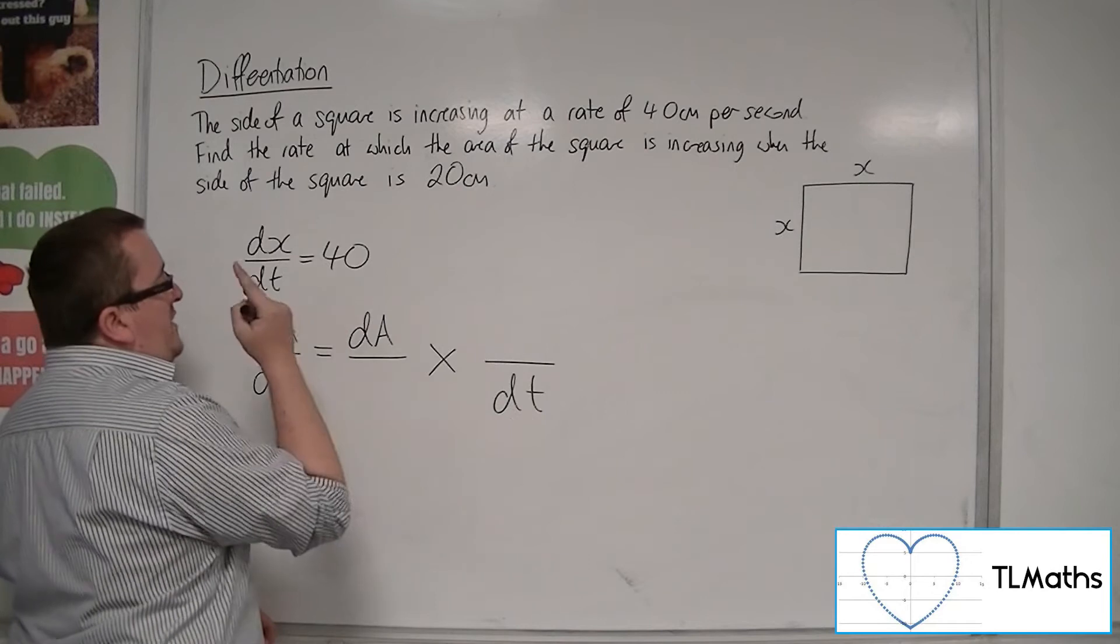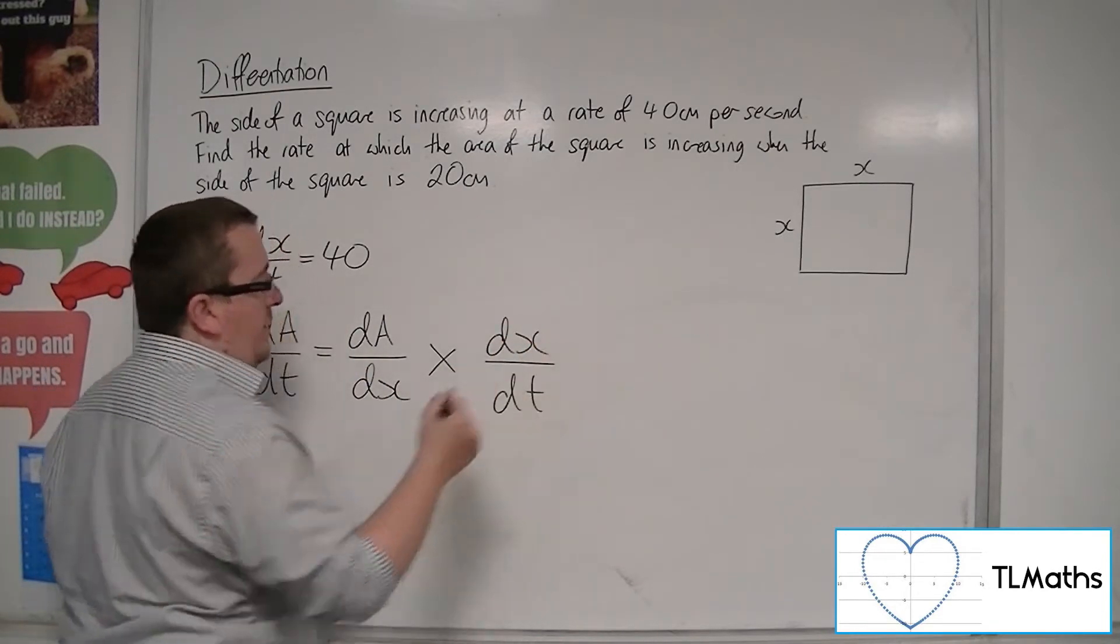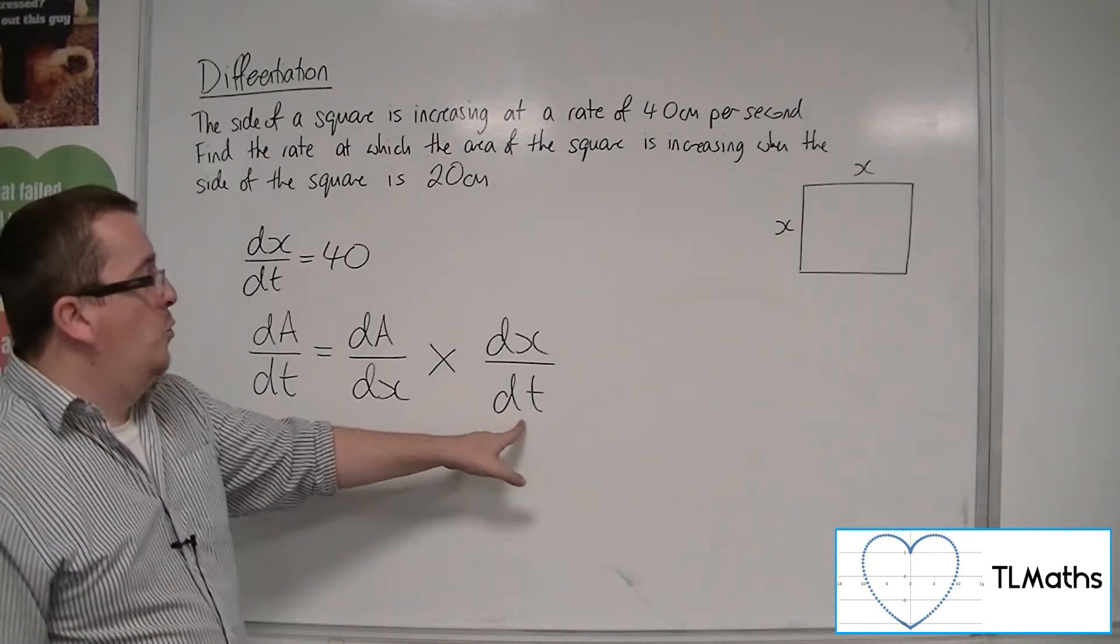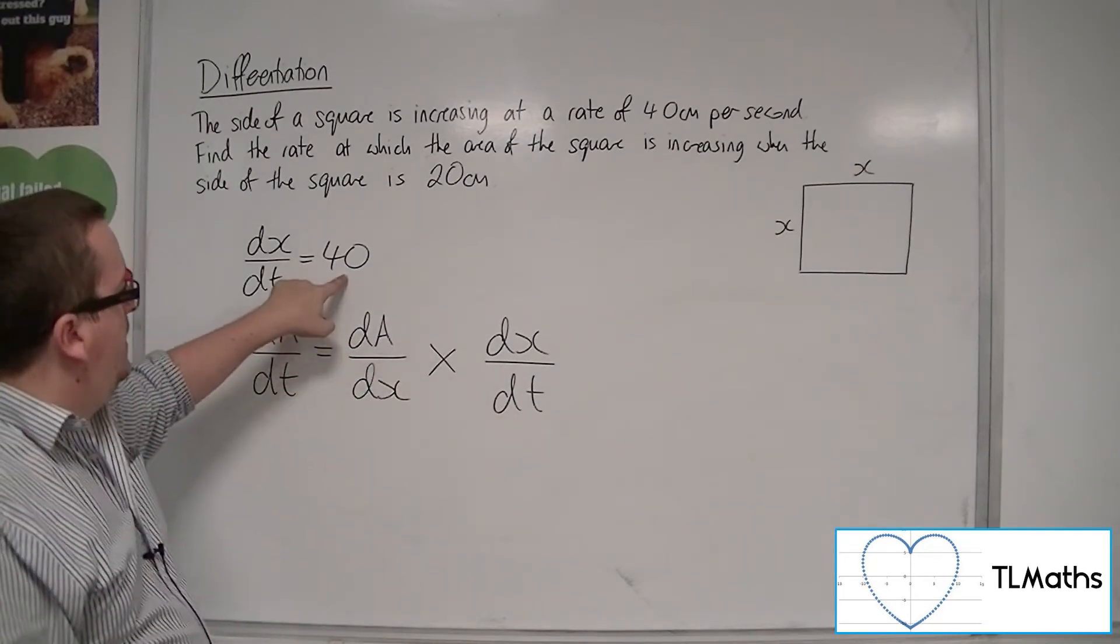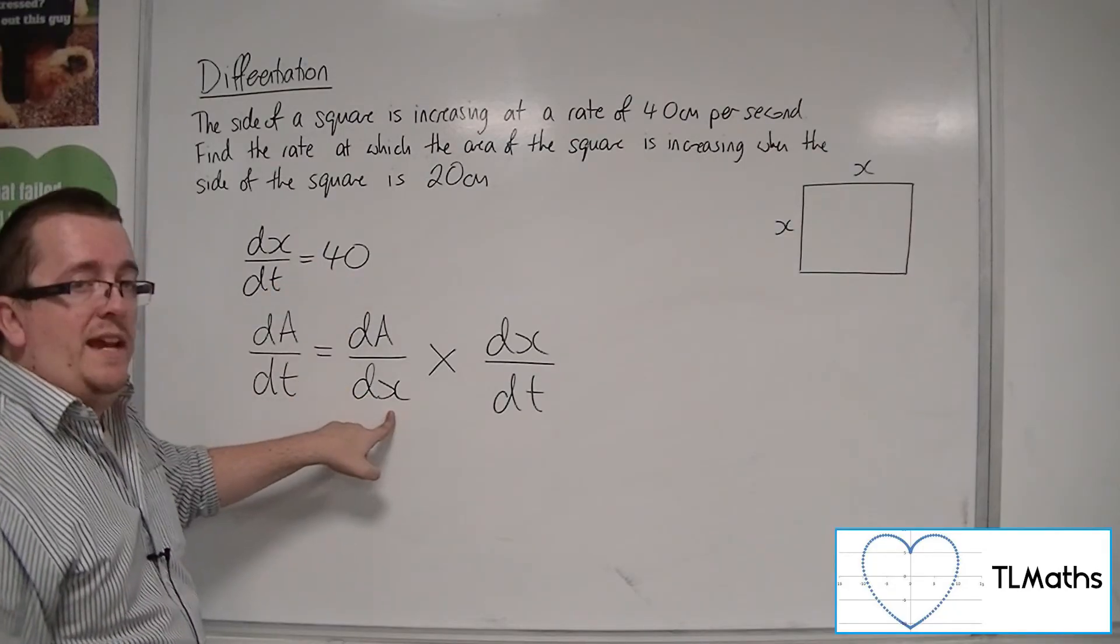The other variable that I have is dx. So that will go there and there. Okay, now I know what dx/dt is, I've got it there. That's one part of the puzzle. But I don't have dA/dx.